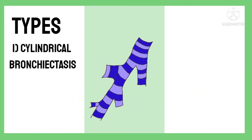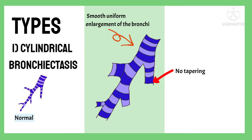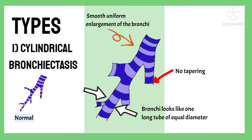In cylindrical bronchiectasis, there is smooth, uniform enlargement of the bronchi. The normal progression of narrowing of the airways distally is lost, and the bronchi look like one long tube of equal diameter. There is no extra pouching or twisting, which is seen in the other types of bronchiectasis. Since it still resembles a long tube, it is also called the tubular type of bronchiectasis.